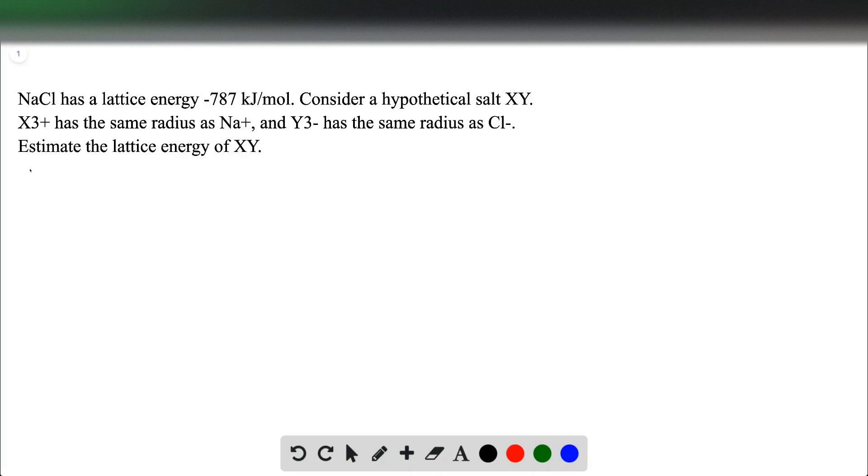So for this question here, we have NaCl, which is sodium chloride, which has a lattice energy of negative 787 kJ per mole, and we want to consider a hypothetical salt XY, which has the same radius as Na and Y has the same radius as Cl, and we want to estimate the lattice energy of XY.